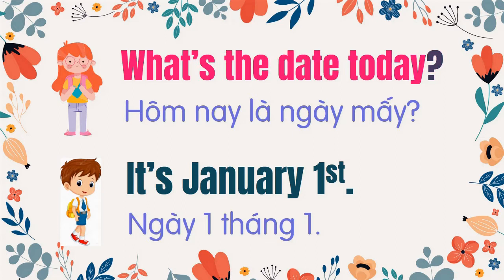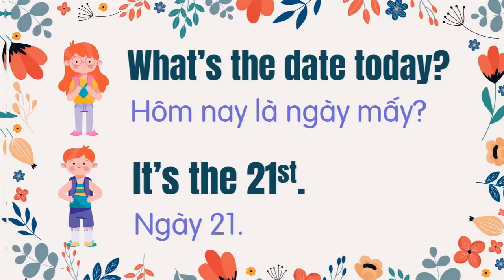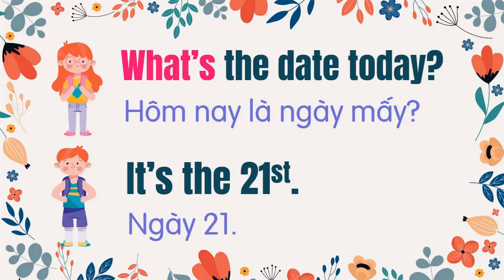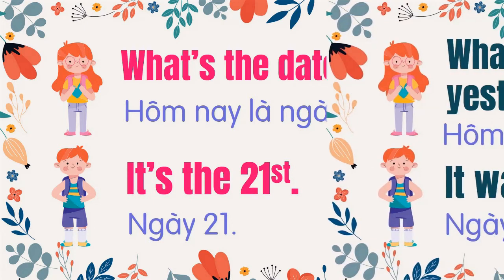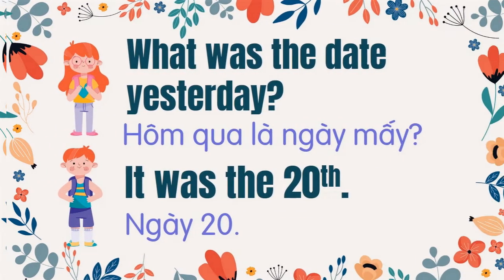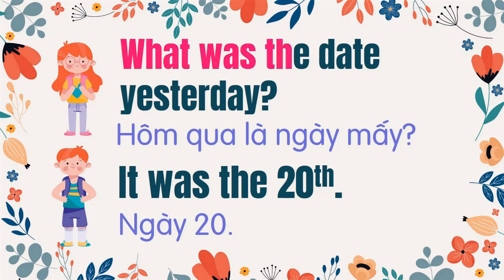What's the date today? It's January 1st. What's the date today? It's the 21st. What was the date yesterday? It was the 20th.